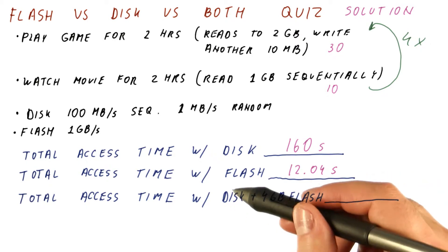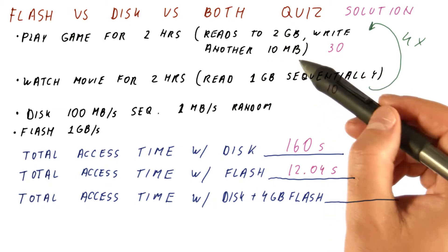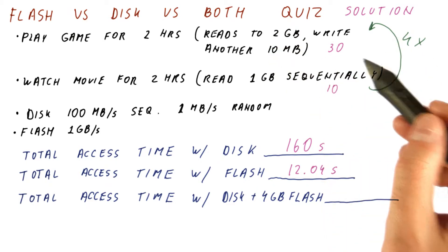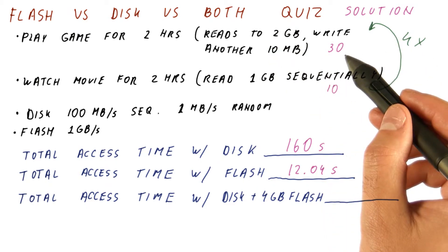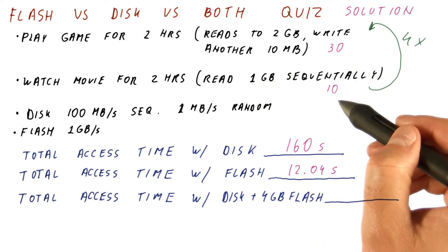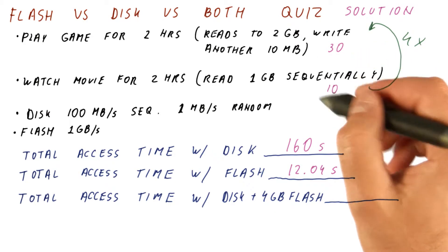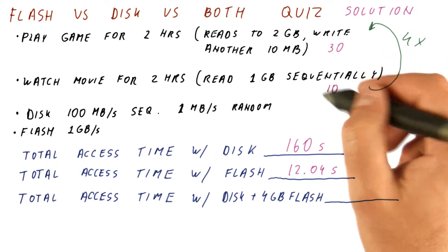So now let's see what happens with the disk and the 4 gigabytes of flash. The first time we read these 2 gigabytes and another 10 megabytes, we will read them in 30 seconds because we are accessing our disk. But then we move them to the flash. The next read is going to be the 1 gigabyte, again, 10 seconds, but we move them to the flash. So we spend 40 seconds accessing the disk in the first round of this.